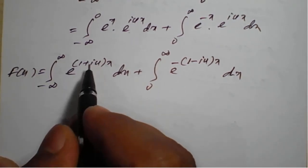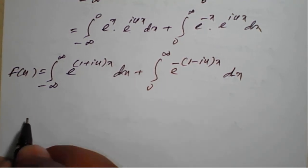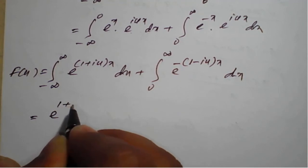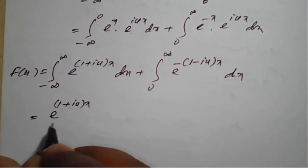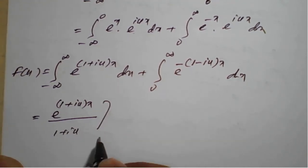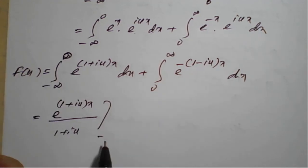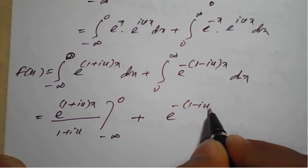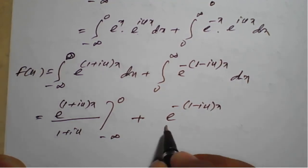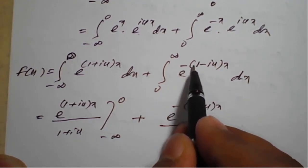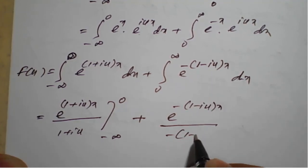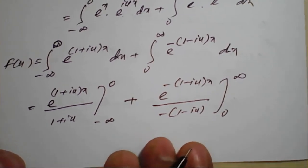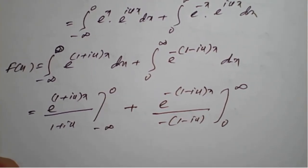Integration of e raised to ax is e raised to ax divided by a, where a is the coefficient of x. So integrating, the first term gives e^((1+i·u)·x) divided by (1+i·u), evaluated from minus infinity to 0, and the second term gives e^(−(1−i·u)·x) divided by (−(1−i·u)), evaluated from 0 to infinity.